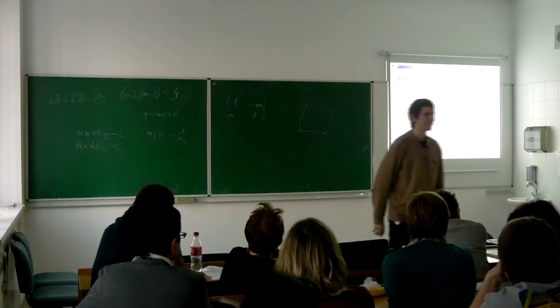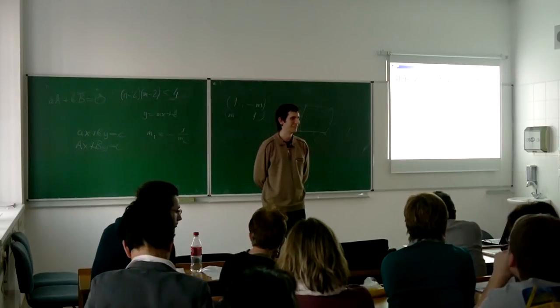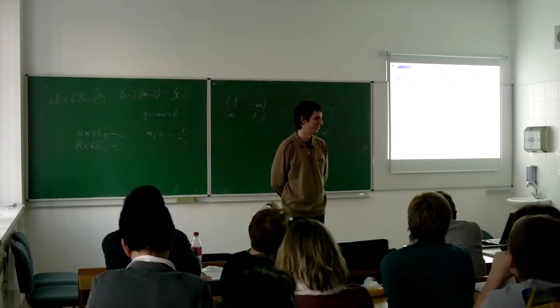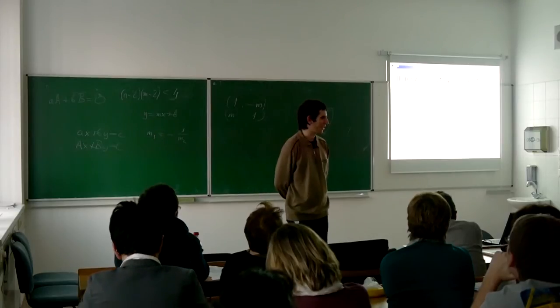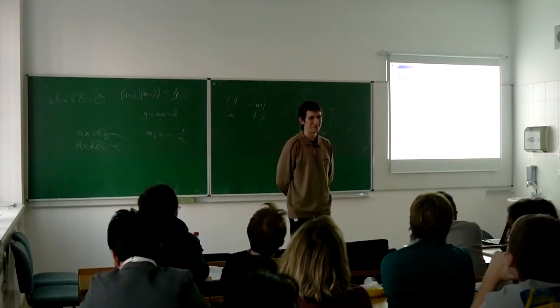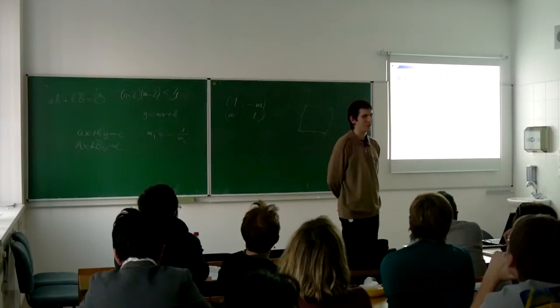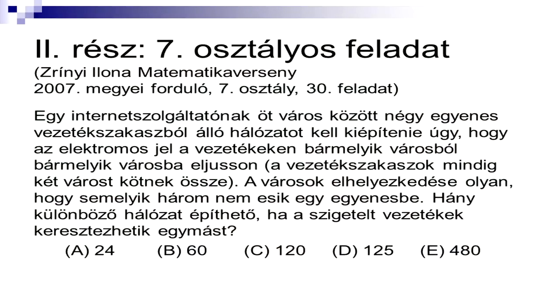Áttérnék a másik feladatra, ami 7. osztályos Zrínyi versenyfeladat volt 2007-ben szintén. Megyei forduló utolsó feladata, tehát 30. feladat. 90 percre van 30 feladat, az utolsóig már tényleg csak a legszántabbak jutnak el. Igazából egy gráfelméleti feladatról van szó, van 5 pont, 5 város, tehát megkülönböztetett pontok, és ezt a gráfelmélet nyelvén egy fával kell alakítani, tehát úgy kell éleket, vagyis itt vezetékeket behúzni, hogy bármelyik város bármelyik másikkal tudjon kommunikálni.